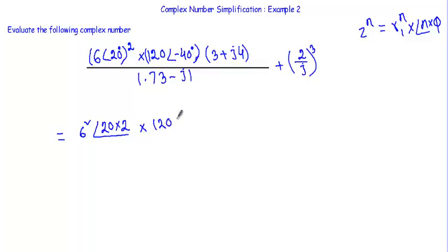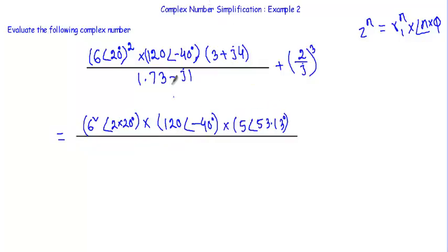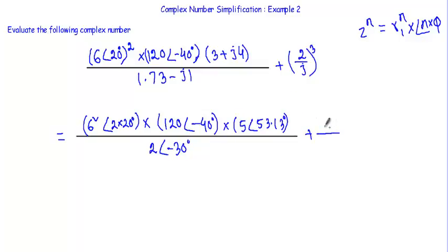Converting 120 phase angle minus 40 degrees is already in polar form. Converting 3 plus j4 into polar form gives 5 phase angle 53.13 degrees. For the denominator, converting 1.73 minus j1 into polar form gives 2 phase angle minus 30 degrees. Also, 2 cubed equals 8, so we have 8 divided by j cubed.